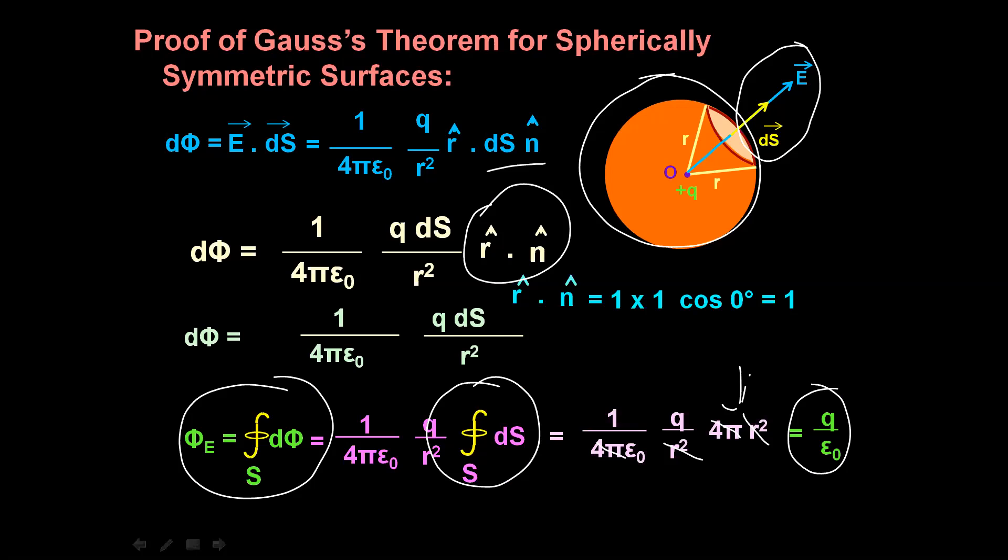Hope this topic is very clear to all of you. Today we discussed what is electric flux — its significance, mathematical formula, SI unit — the statement of Gauss's theorem, and its proof by taking a spherically symmetrical surface. Hope this topic is very clear, and Gauss's theorem is now as easy as 1, 2, 3. Thank you for watching. Have a great day!